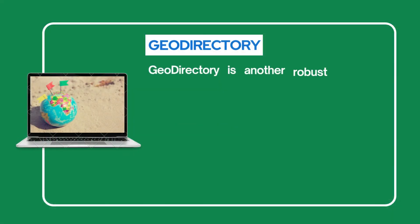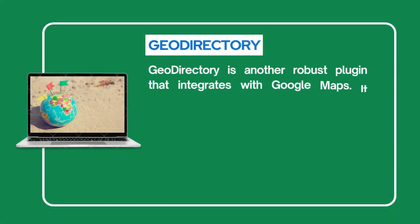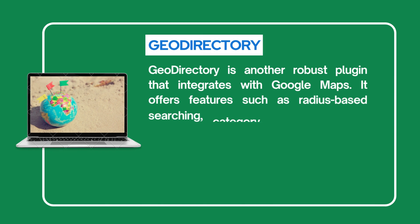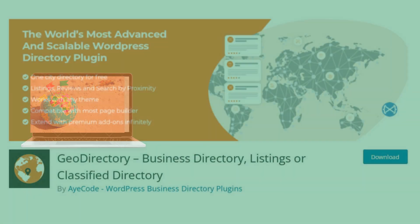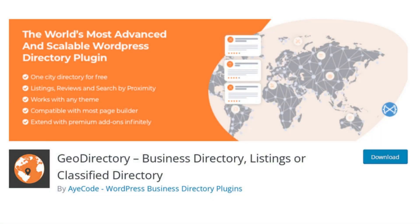Our last plugin is Geo Directory. This is another robust plugin that integrates with Google Maps. It offers features such as radius-based searching, category filters, directions, and customization options for the locator interface.